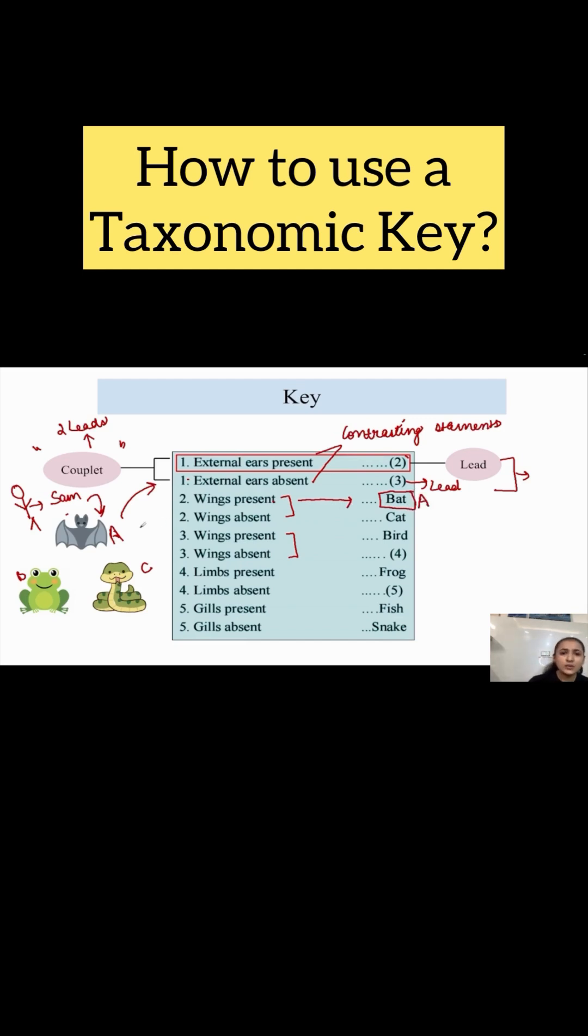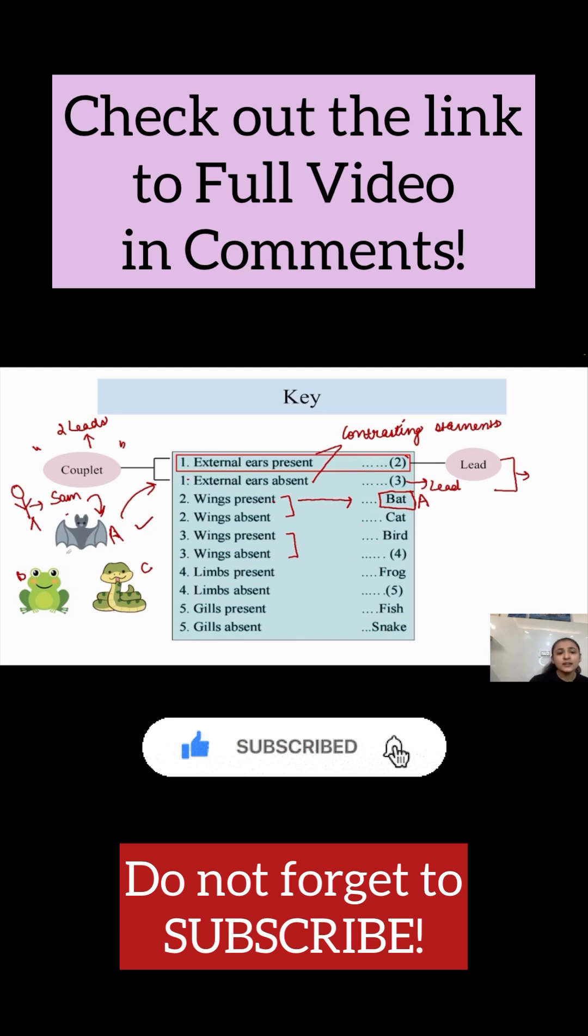So, see how easily we identified a bat? Taxon A has been identified. Now, coming to the second organism, that is the frog.